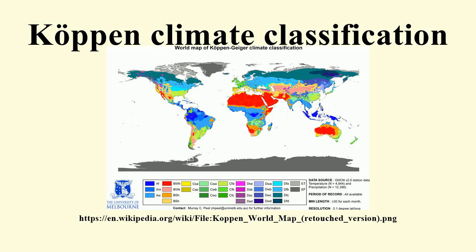Köppen climate classification is one of the most widely used climate classification systems. It was first published by Russian-German climatologist Vladimir Köppen in 1884, with several later modifications by Köppen himself, notably in 1918 and 1936.